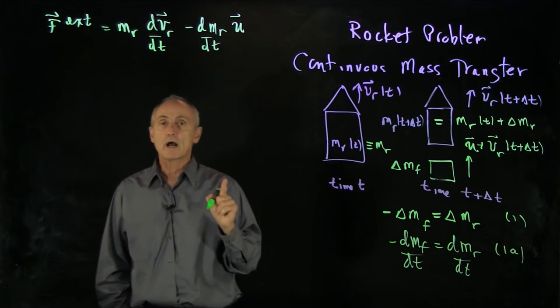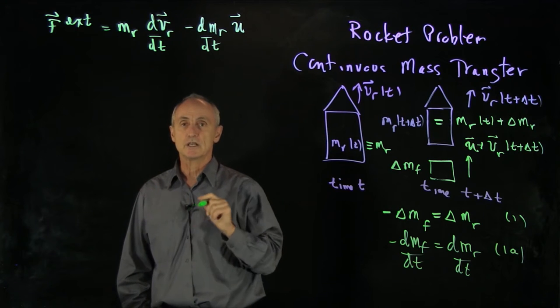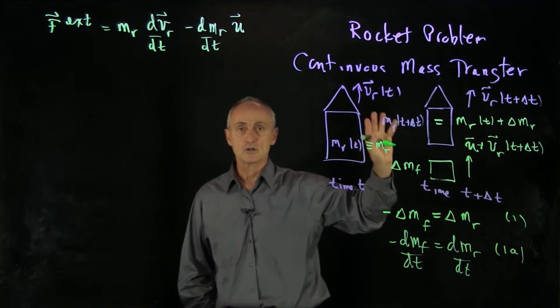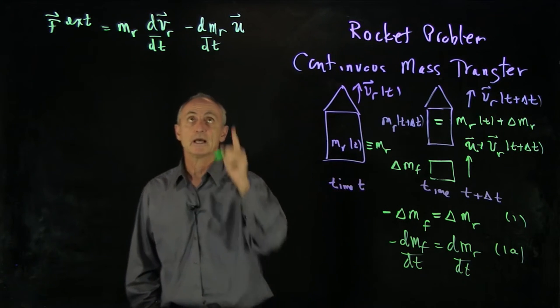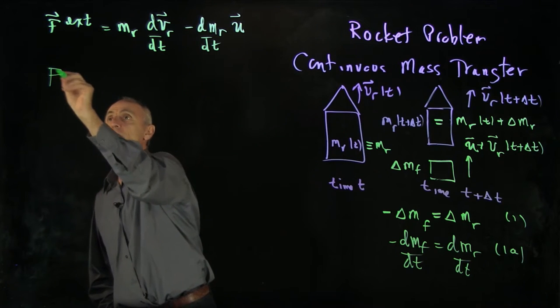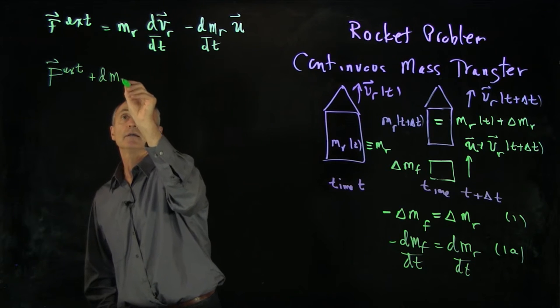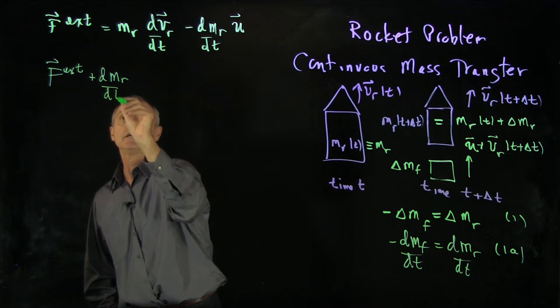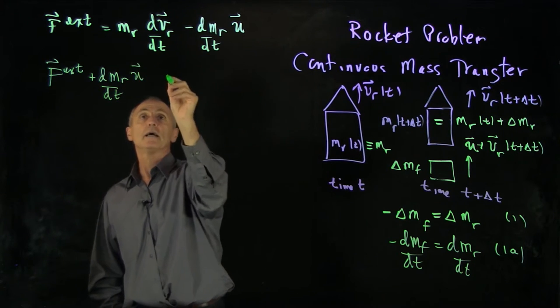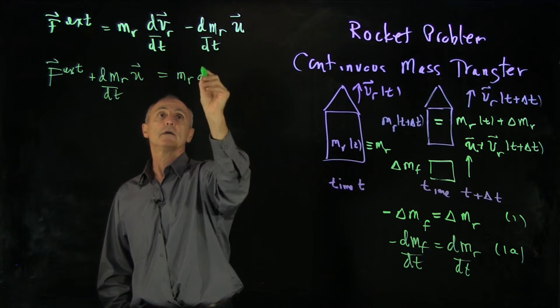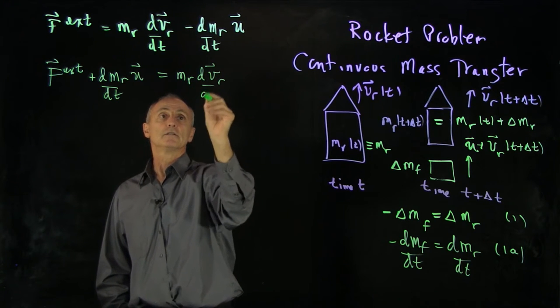So now, I want to interpret this equation in a different way, and it will come back to what we mean by our system. Let's first bring this other term over to this side. So we have plus dmr dt u, and that's equal to mr dvr dt.